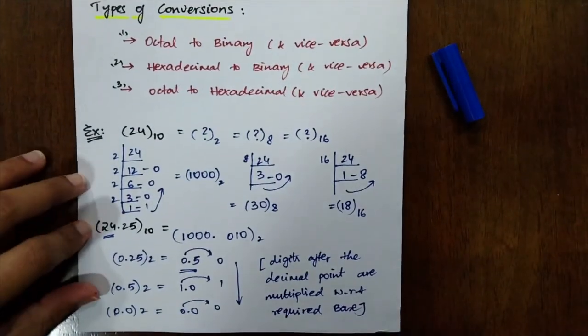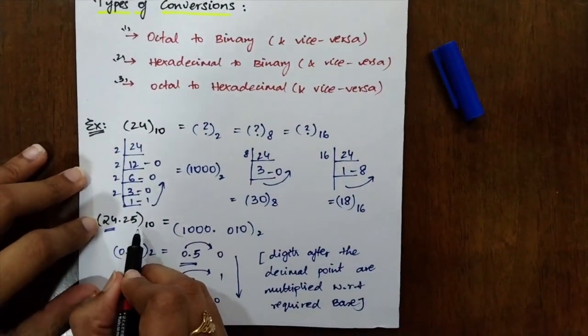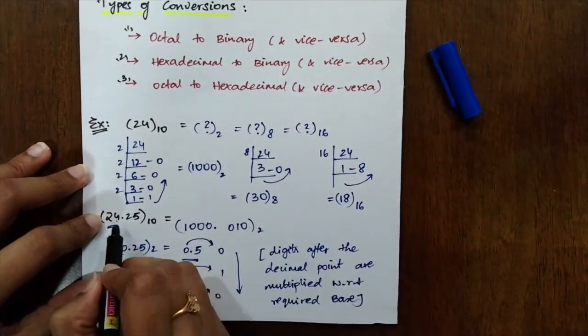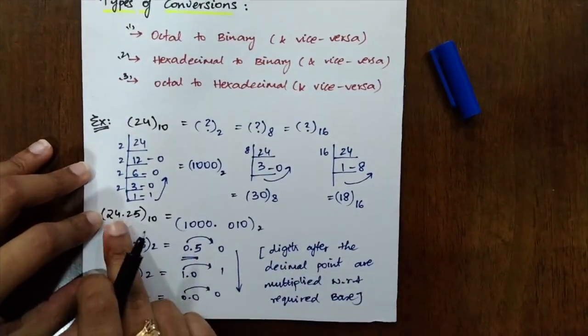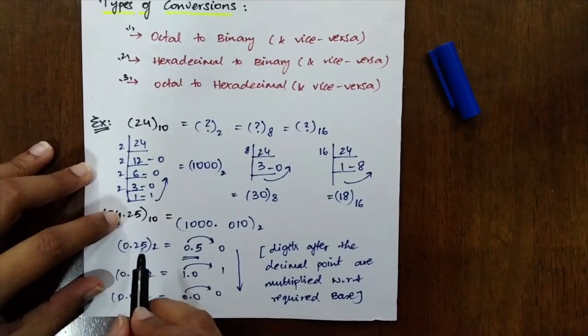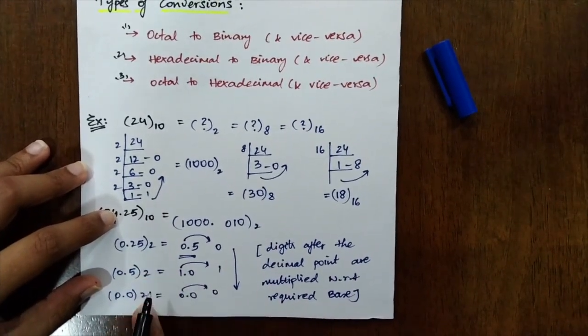In simpler terms, I want to tell you digits after the decimal point are multiplied with respect to the required base. See, in the same way, again, if you want to find the octal notation for this one, the 30 for the decimal part will be the same. Now for the ones after the decimal point like 0.25, instead of 2, you will be multiplying it with 8 for all the things. For even the hexadecimal notation, you will be multiplying it with 16.